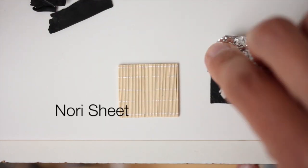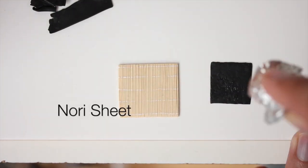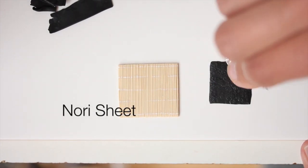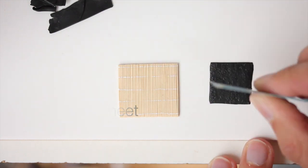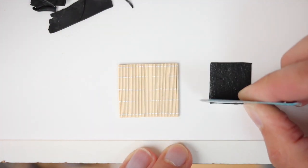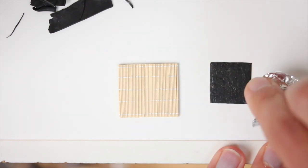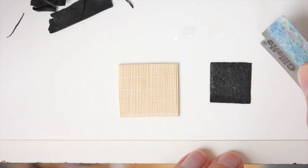Now I'm making the nori sheets. I just used a very thin piece of black clay and I'm texturing it with some aluminum foil, cutting it to size, and then just placing it on the previously done sushi mat.